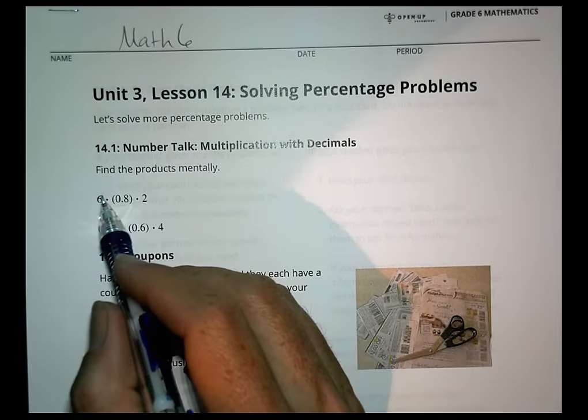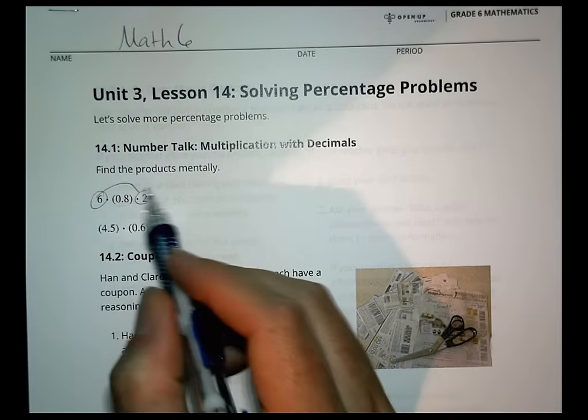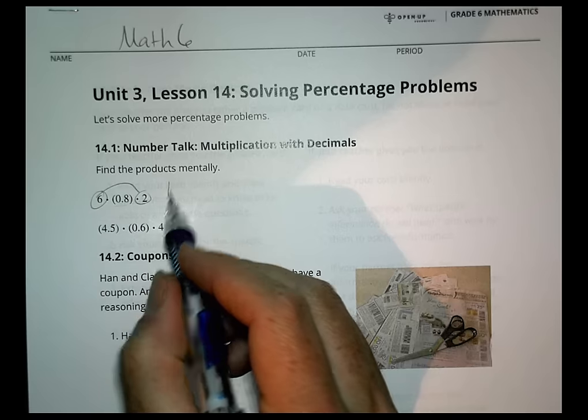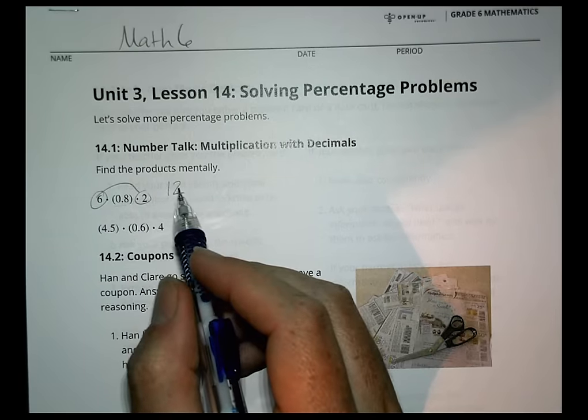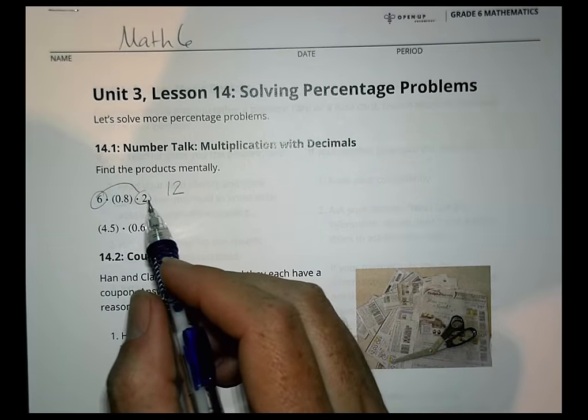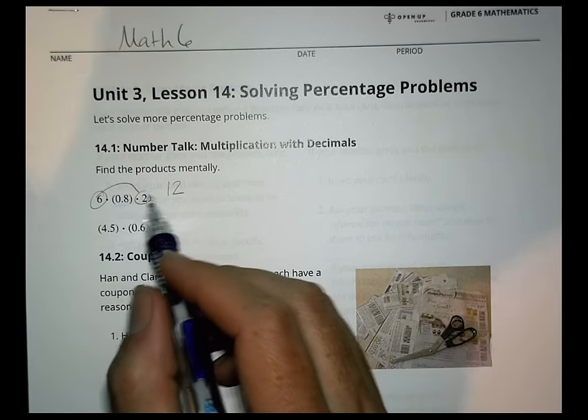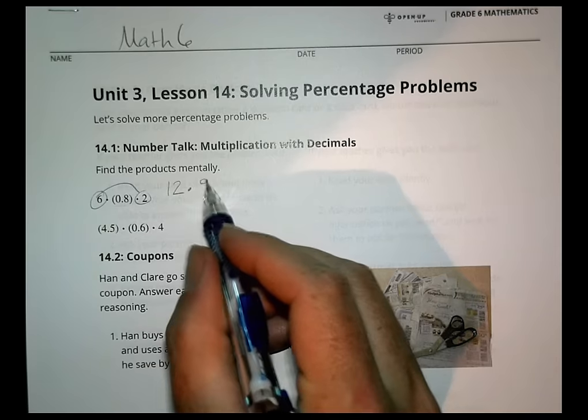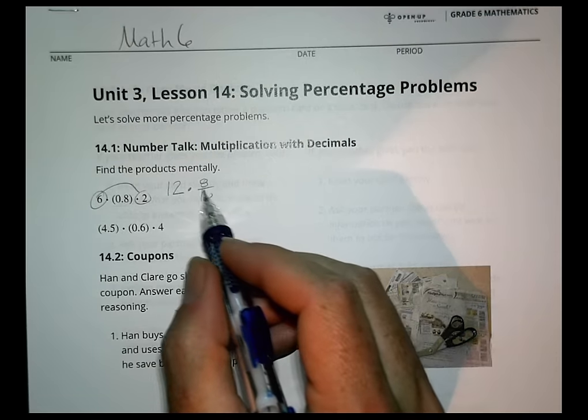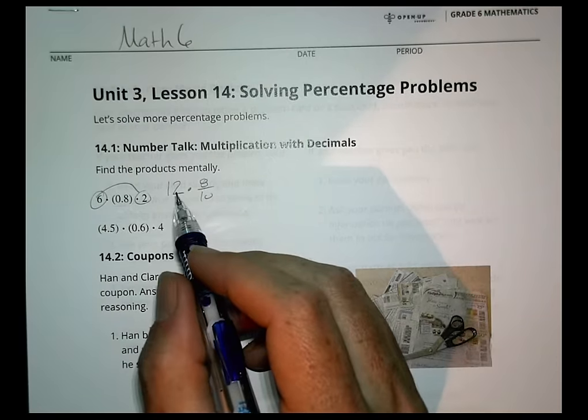So a couple things you might think about. Maybe you notice that 6 and 2 become 12. You're probably okay with that part. That's just mental. But that 0.8 becomes like multiplying by 8 tenths.